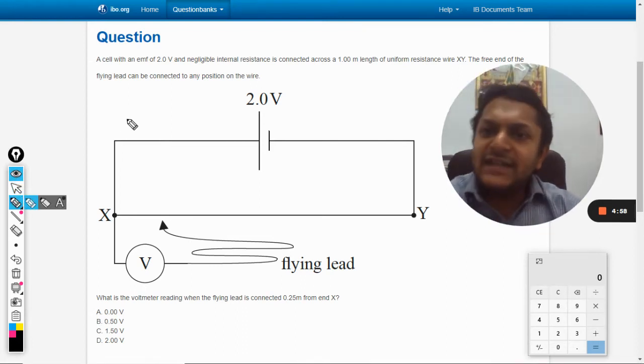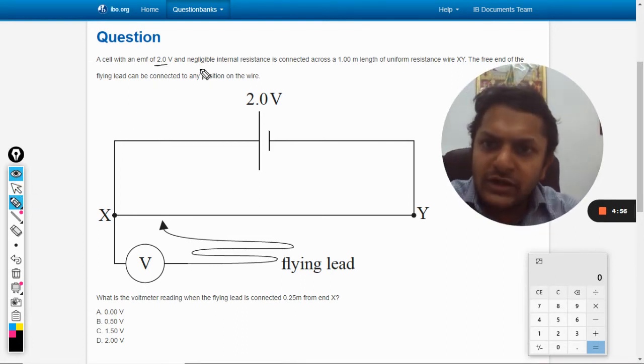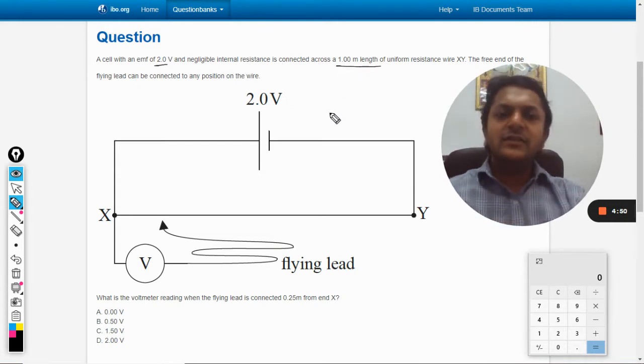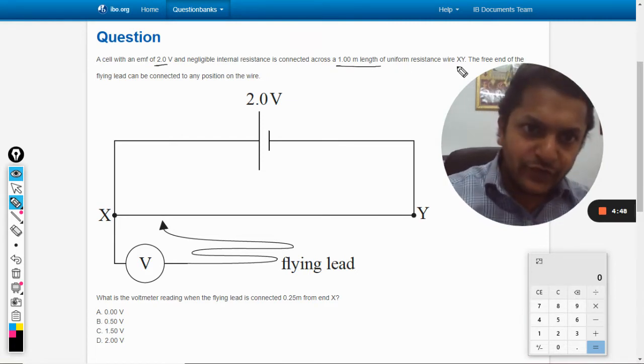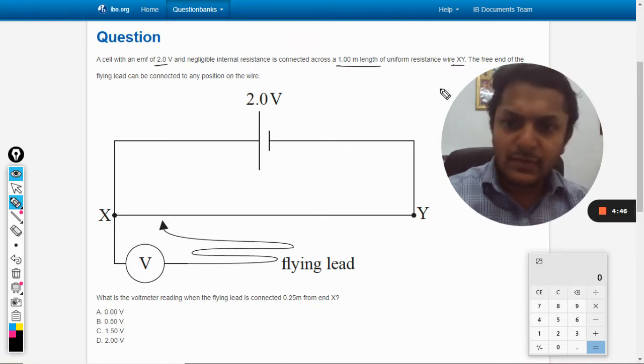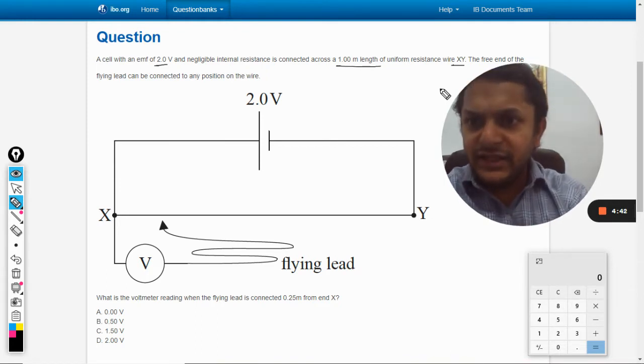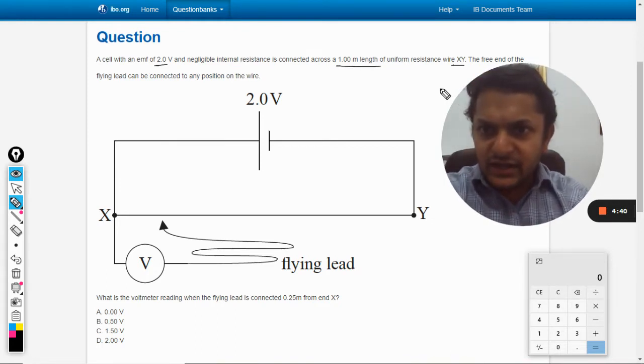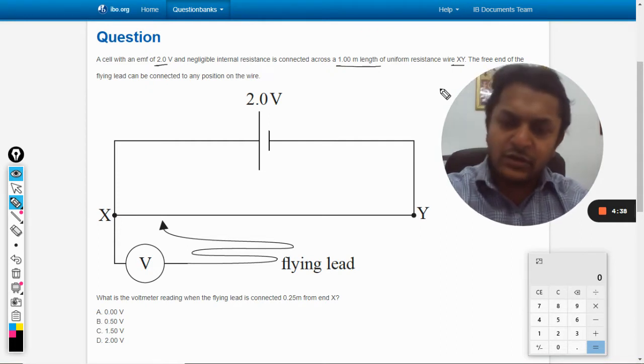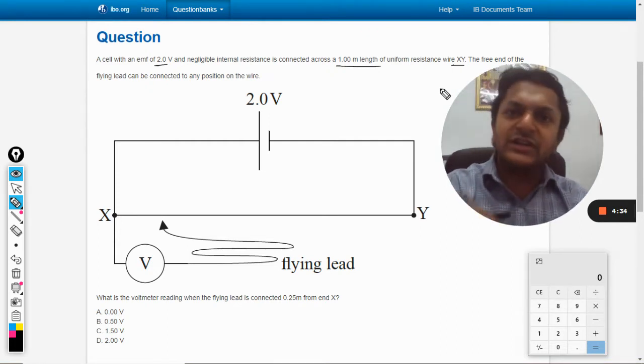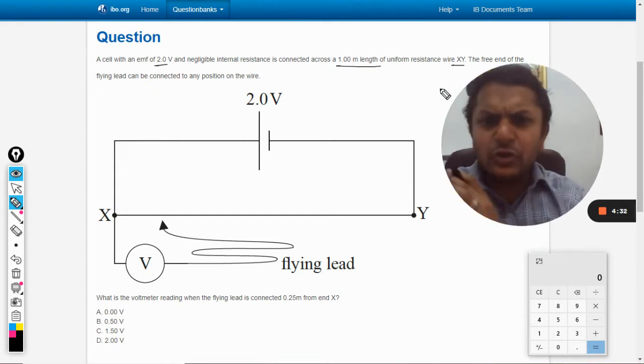A cell with an emf of 2 volt and negligible internal resistance is connected across one meter length of uniform resistance wire XY. The free end of the flying lead can be connected to any position on the wire. This is a typical case of potentiometer.